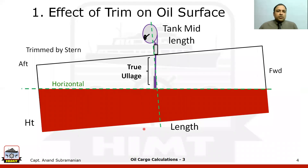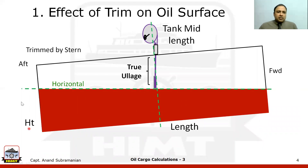Now let us look at the effect of trim on the oil surface. Here we have a tank which is trimmed by stern. This is the aft portion of the tank and there is a forward portion of the tank. Because it is trimmed by stern, we see that the aft sounding is more than the forward sounding.